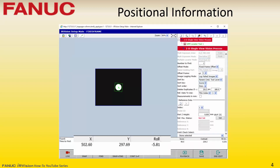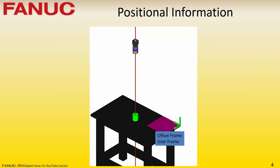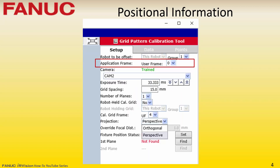IRVision reports positional information in millimeters and degrees relative to the offset frame specified in the vision process. This is a user frame or tool frame whose Z axis is perpendicular to the plane in which the parts are located and in which they will move around. When possible, the Z axis of the offset frame should be parallel with the optical axis of the camera. Some vision process types do not have the offset frame option; for these, positional information is relative to the application frame selected in the calibration used by that vision process.